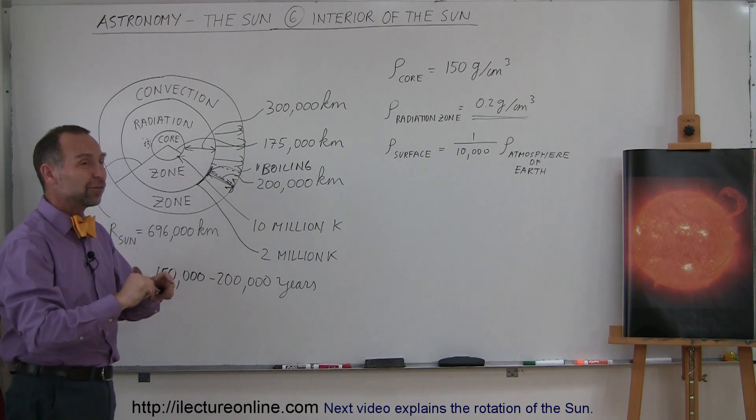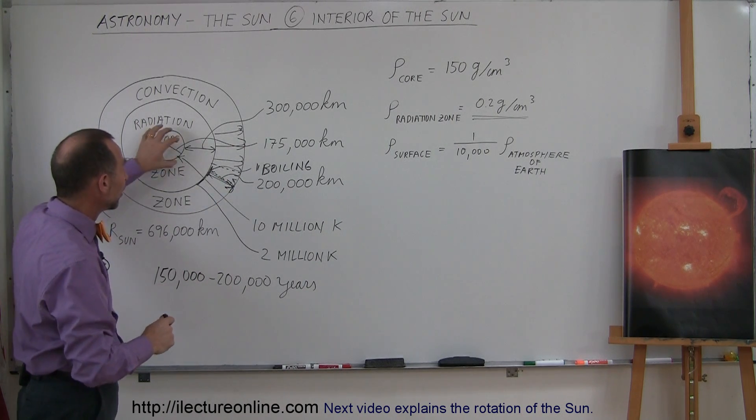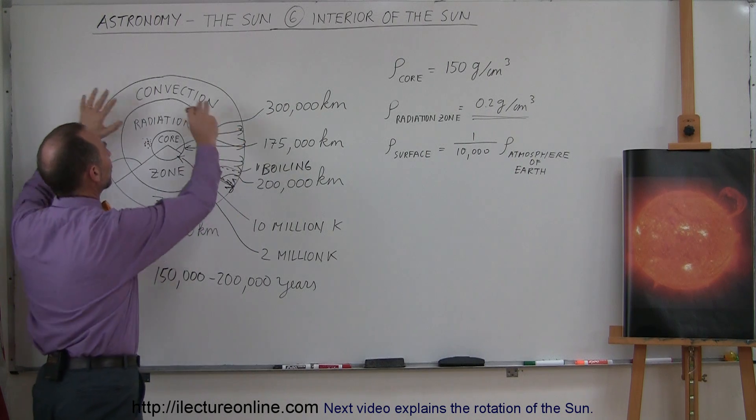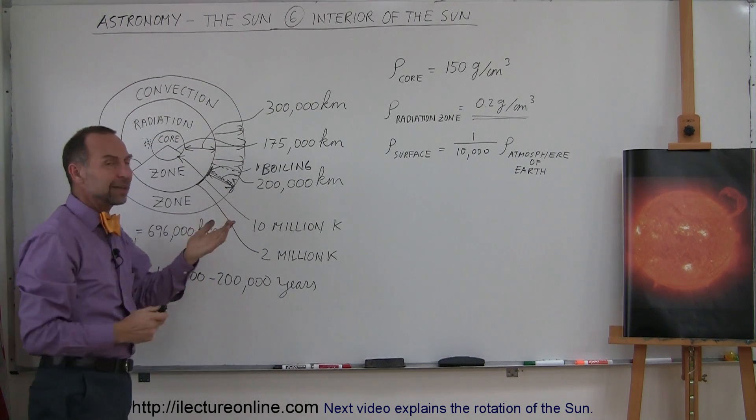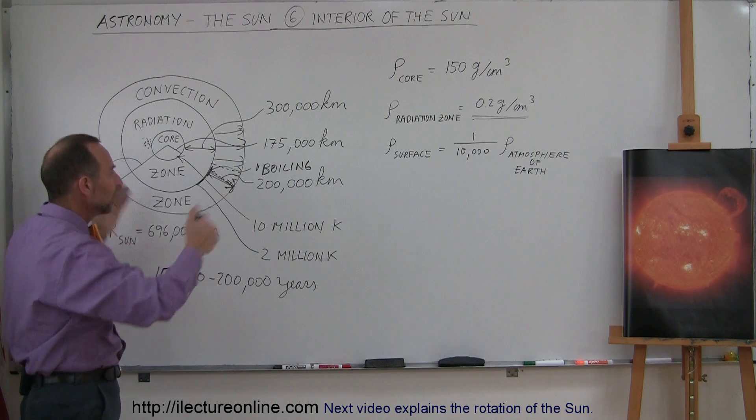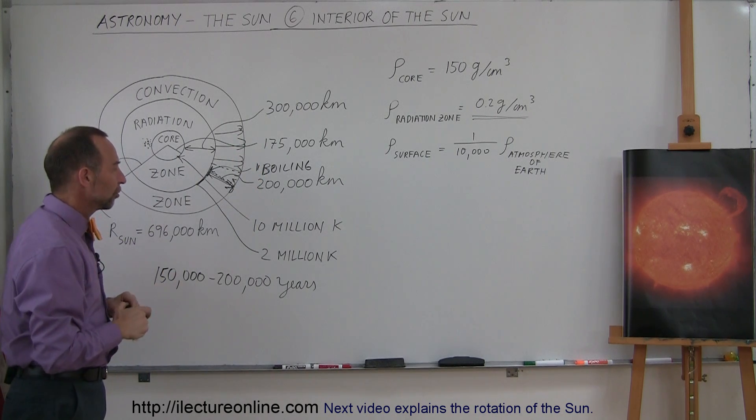So basically, the Sun is very dense and very heavy near the center and very rarefied at the surface, with this rarefied gas at very high temperatures bubbling up and down and releasing the energy off into the Solar System.